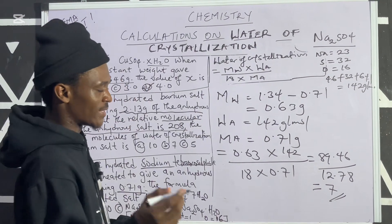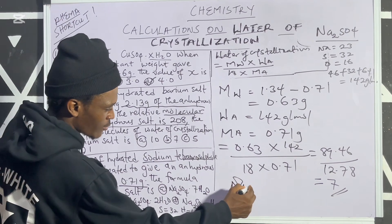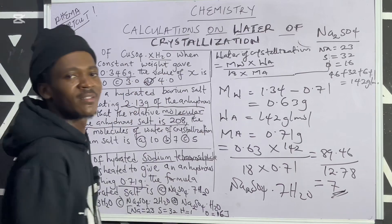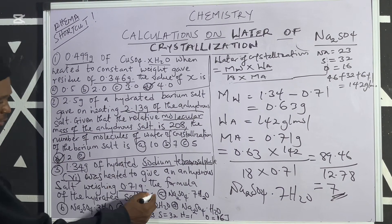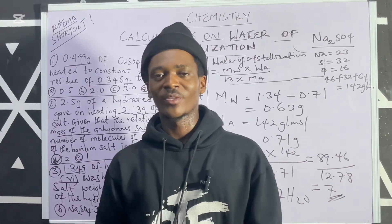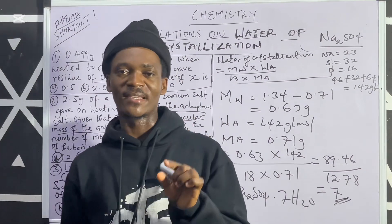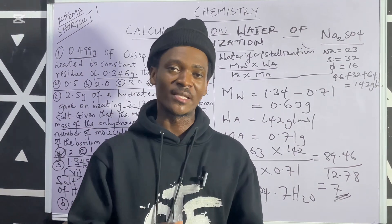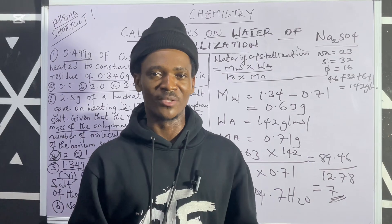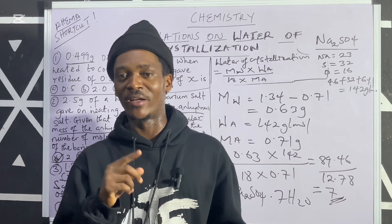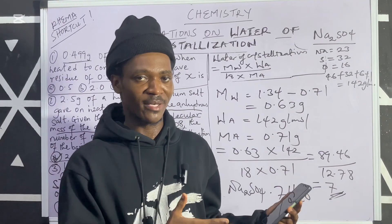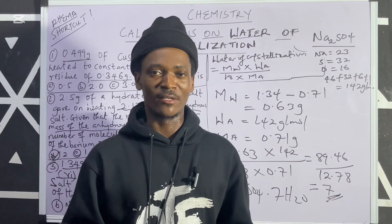89.46 divided by 12.78 gives exactly 7. This means Na₂SO₄ contains 7 molecules of water of crystallization, so the hydrated salt is Na₂SO₄·7H₂O. The correct option is option A. We have seen how to use this shortcut formula to easily attempt questions on water of crystallization — with this formula you can smash any question from this topic. Please subscribe to the channel, share with friends who are preparing for exams, and stay tuned as more videos are coming.